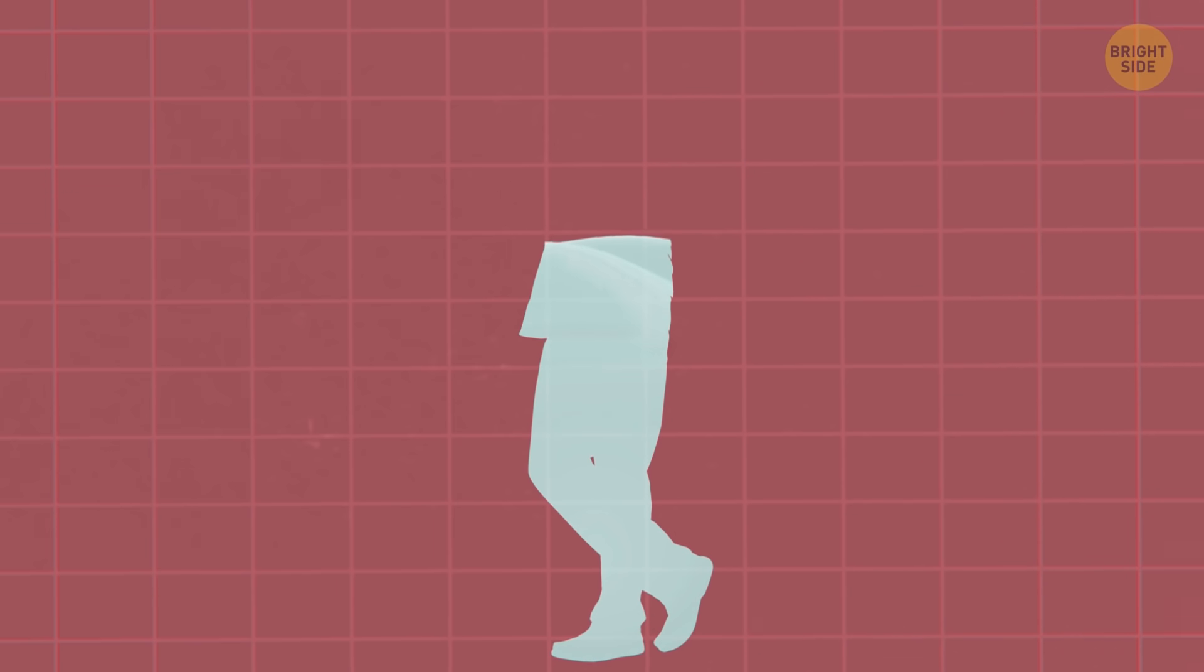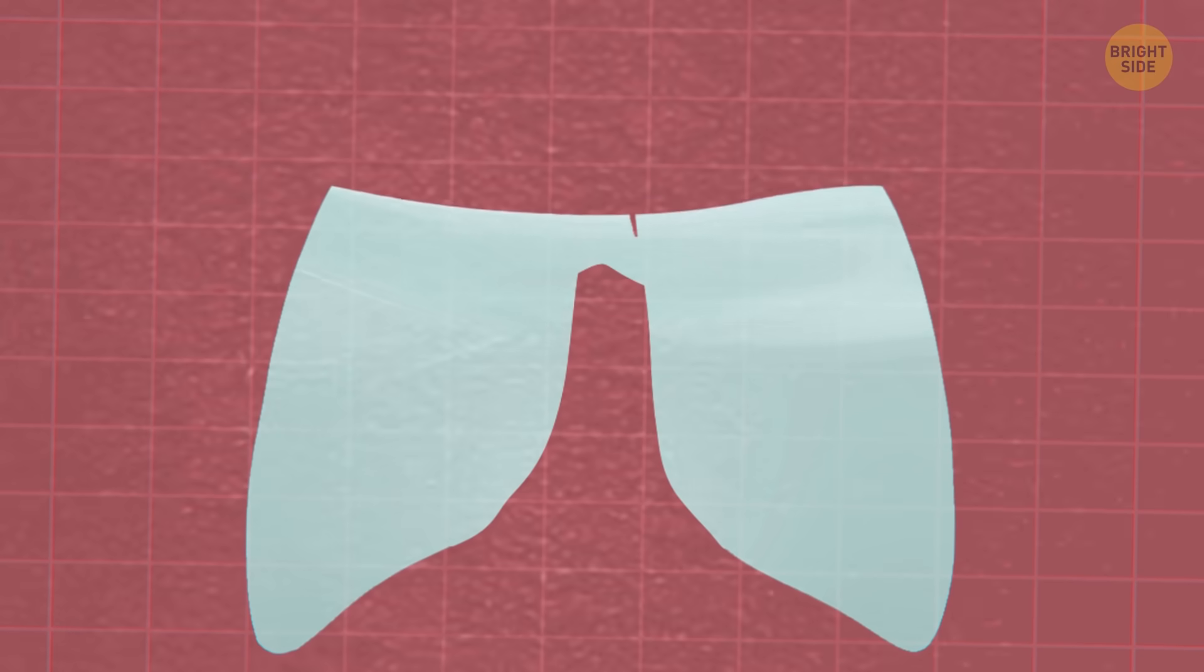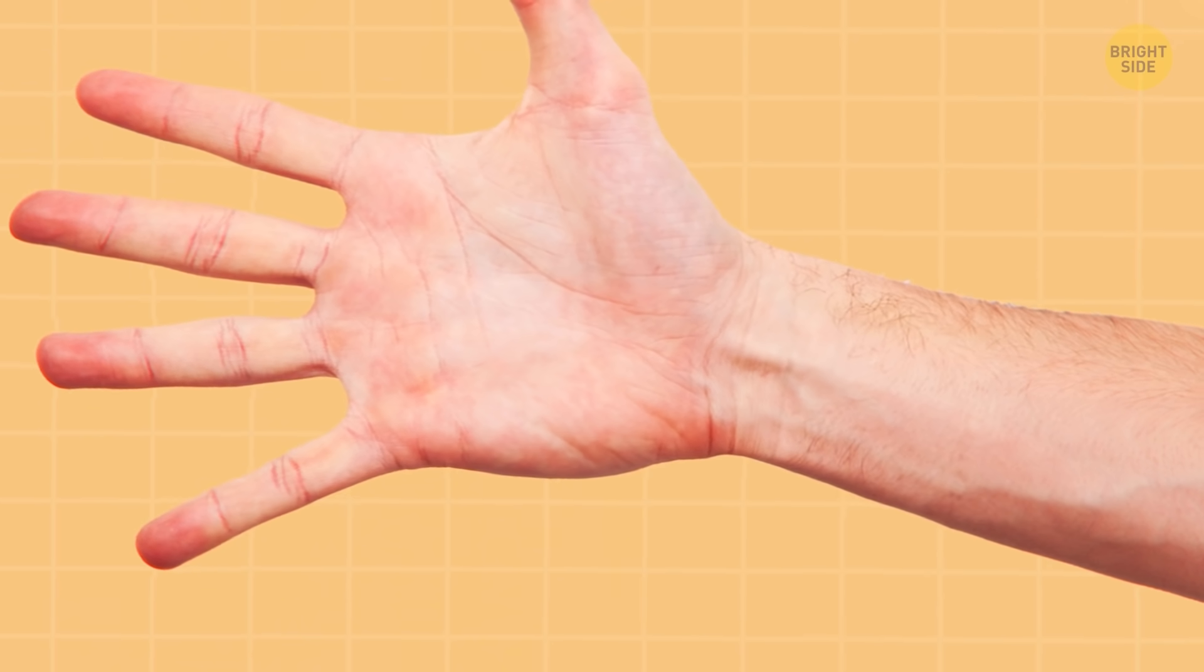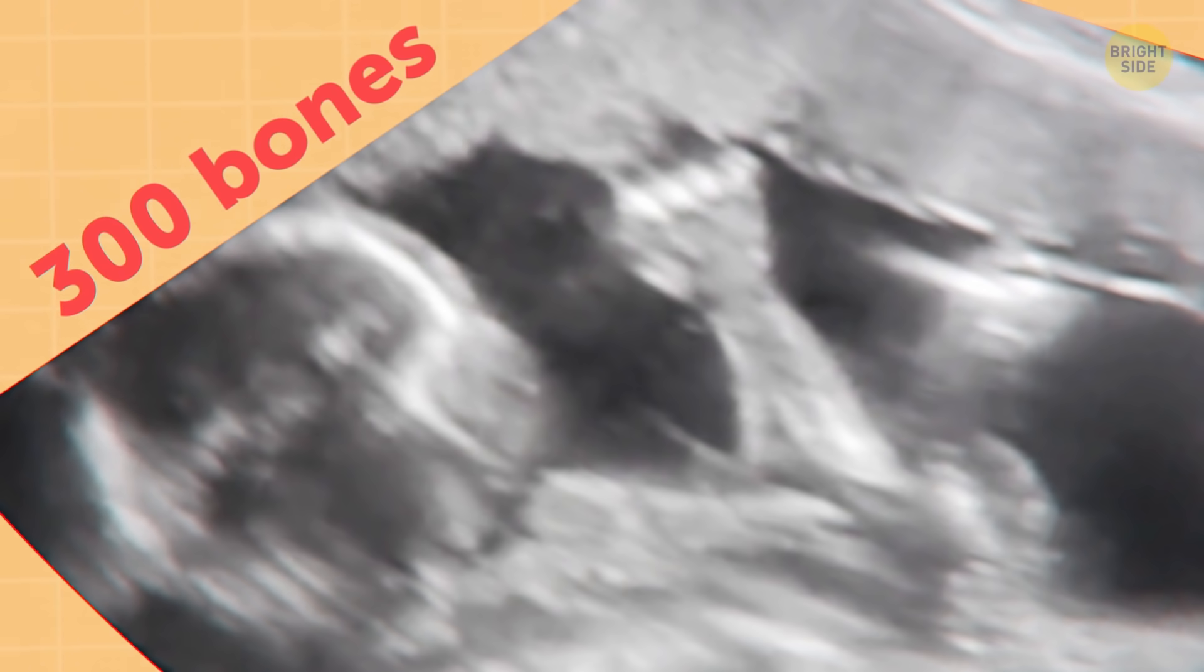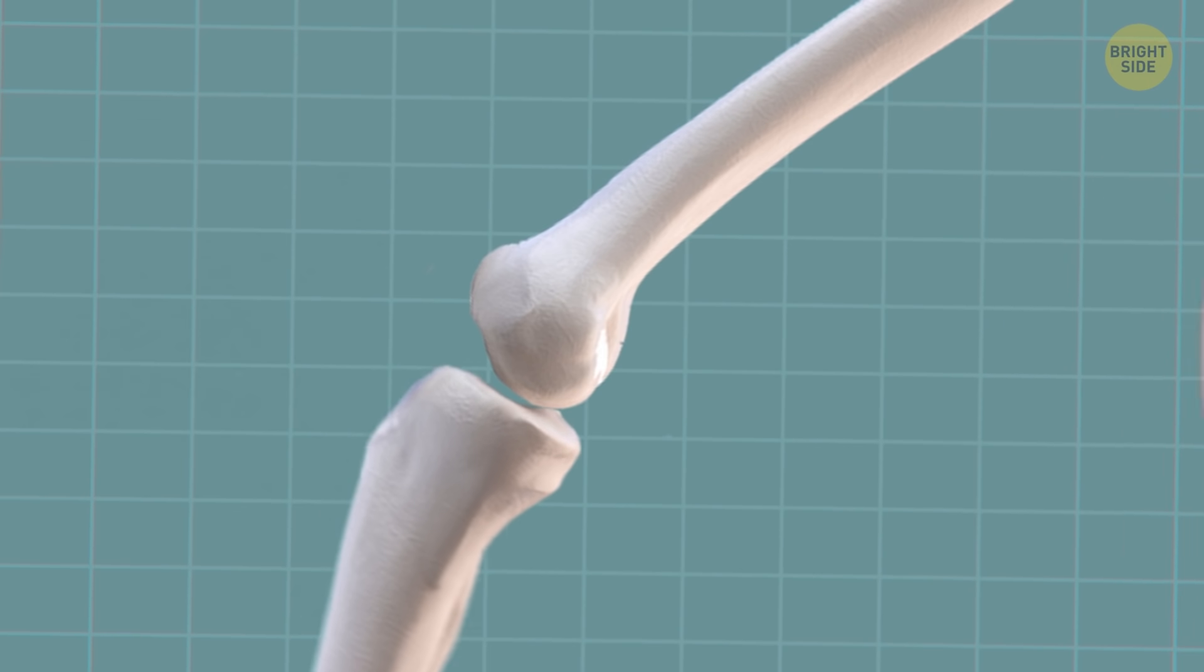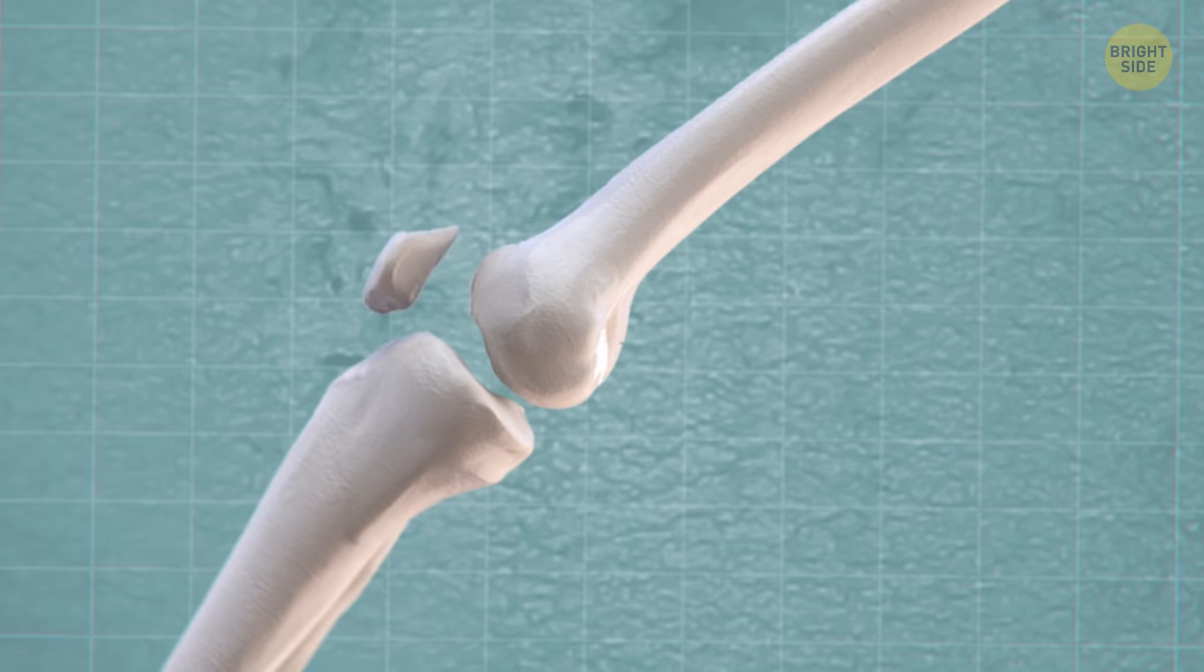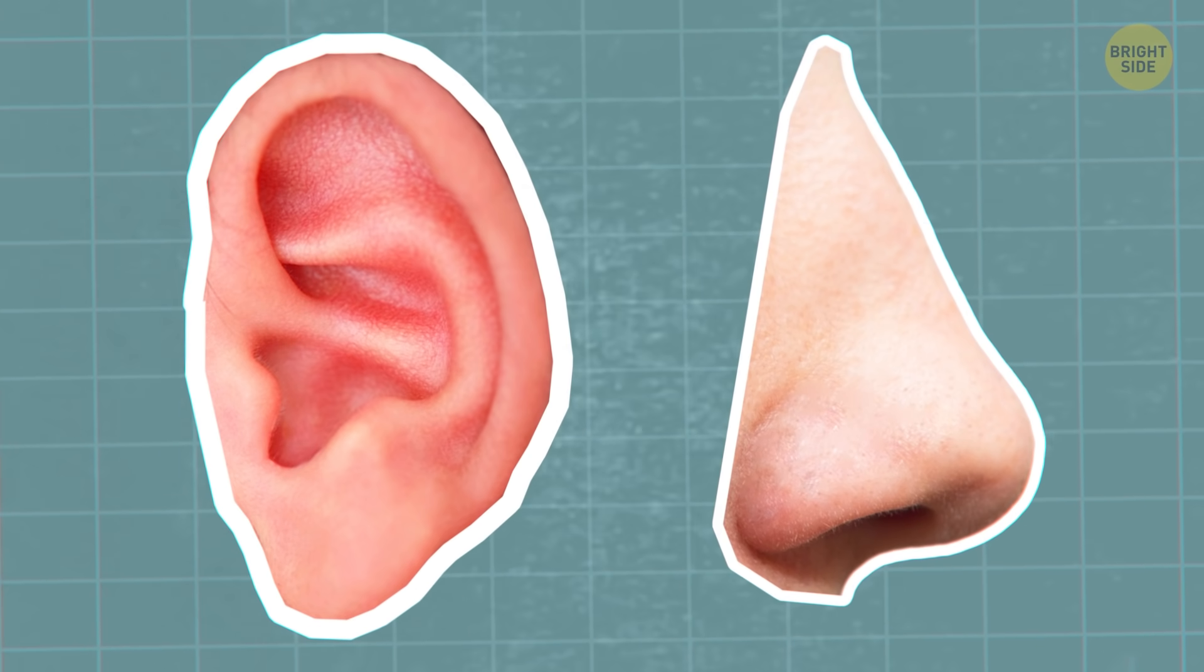You're also 60% water. Your brain and heart are over 70% and the lungs 80%. Your body is ever-changing. Boy, don't I know it. When you're born, you have about 300 bones. By adulthood, one-third of those have fused together to leave you with just 206. And you're technically missing kneecaps until about age 3. At first, they're made of cartilage, the same bendy stuff as your ears and nose, and then harden into bone.